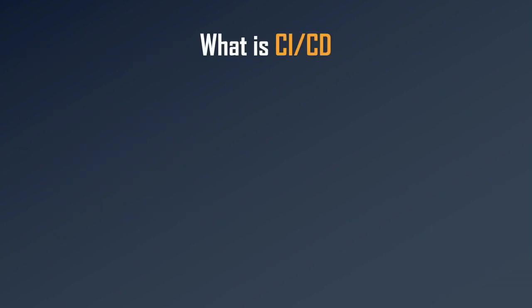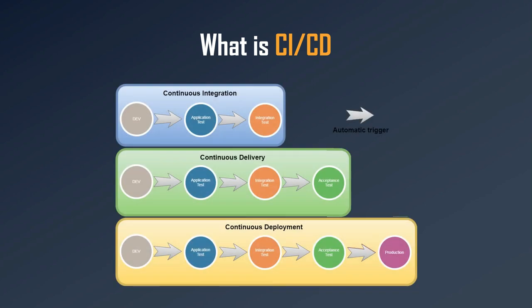First, what is CI/CD? CI stands for Continuous Integration, CD stands for Continuous Delivery, and there is also Continuous Deployment — again CD. In Continuous Integration we have three jobs or processes chained and linked with each other. If the dev job runs and passes, it will trigger the next job — the application test. If that passes, it triggers the integration test.